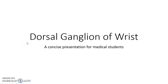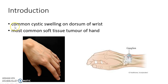Hello guys, this is Indian Medico and in this video we are going to see about dorsal ganglion of wrist. Dorsal ganglion is a common cystic swelling on the dorsum of wrist. In fact, it is the most common soft tissue tumor of the hand.